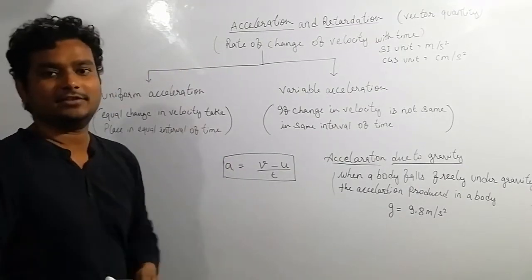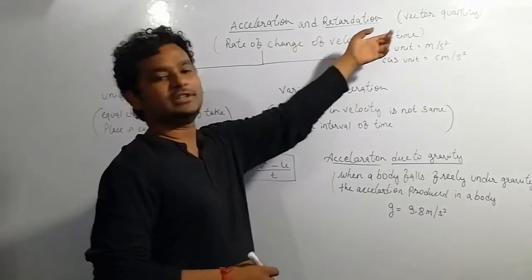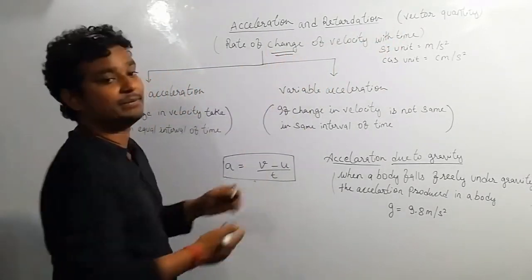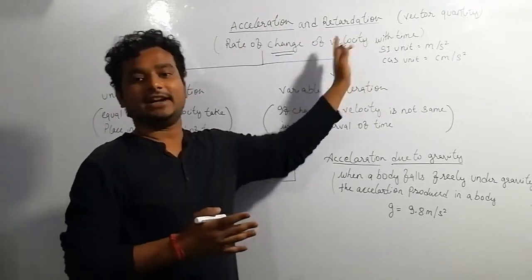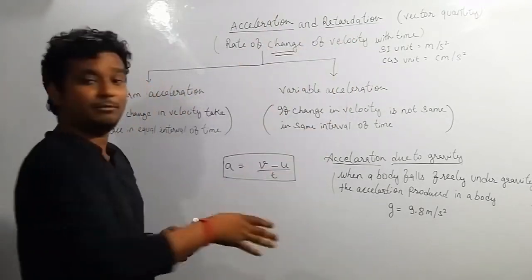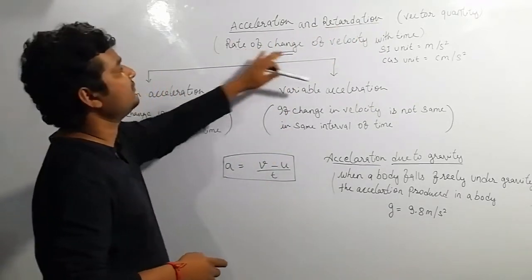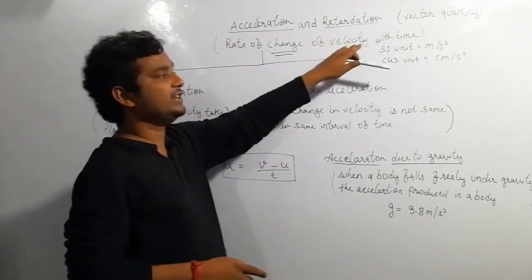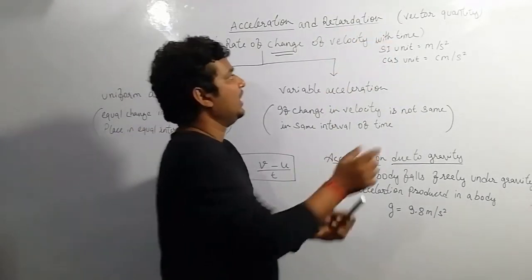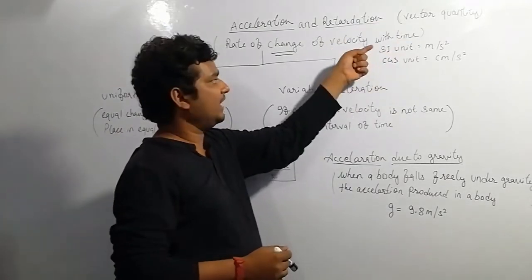Now, acceleration and retardation. Acceleration is the rate of change of velocity with time, specifically when the velocity is increasing. When the velocity keeps on decreasing with respect to time, that is called retardation. So retardation is the rate of change of velocity when velocity is decreasing with time.